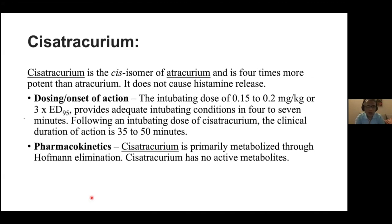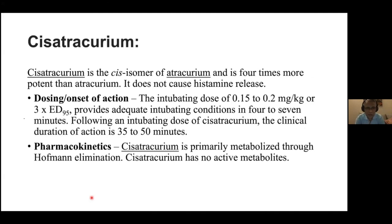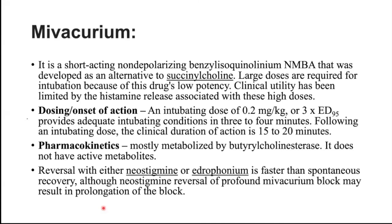Cisatracurium is the cis-isomer of atracurium, four times more potent; intubating dose 0.15–0.2 mg/kg (3×ED95), clinical duration 35–50 minutes, with no active metabolites — making it the preferred benzylisoquinolinium agent. Mivacurium is a short-acting non-depolarizing benzylisoquinolinium agent developed as an alternative to succinylcholine; intubating dose 0.2 mg/kg (3×ED95) provides adequate conditions in 3–4 minutes, duration 15–20 minutes, metabolized mostly by plasma butyrylcholinesterase, no active metabolites. Reversal with neostigmine or edrophonium is faster for mivacurium.